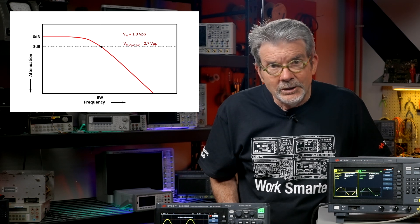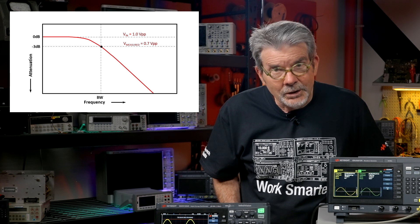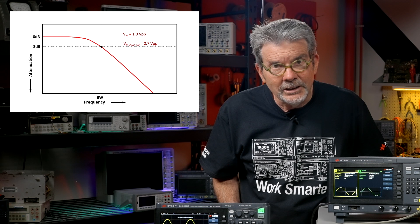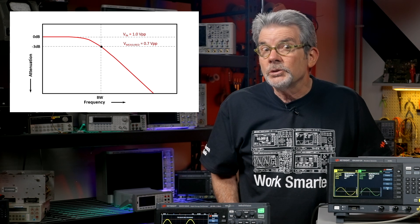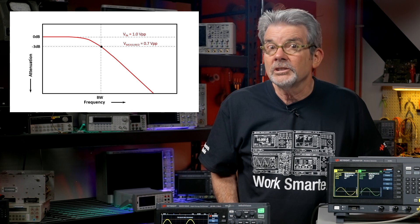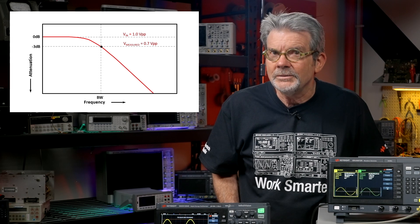Unfortunately, we don't live in a perfect world, and scopes don't have infinite bandwidth. The minus 3 dB point is where oscilloscope bandwidth is specified. Minus 3 dB is equivalent to an absolute gain of 0.7, which means that the input signal at the bandwidth frequency can be attenuated by as much as 30%, which is a significant amount of error.